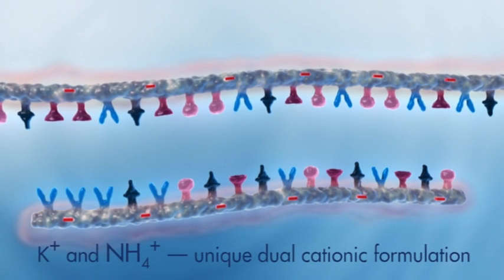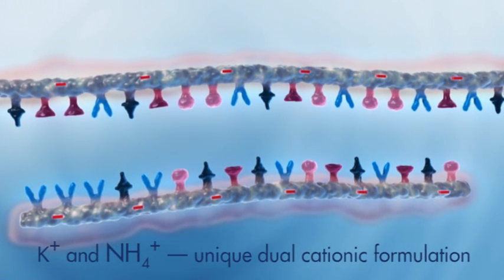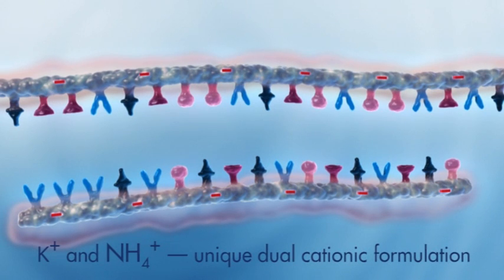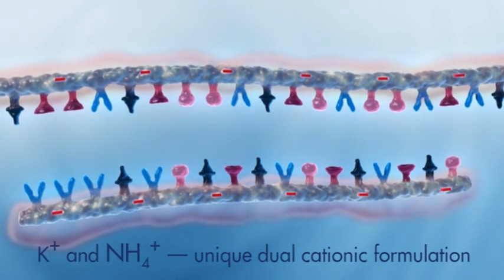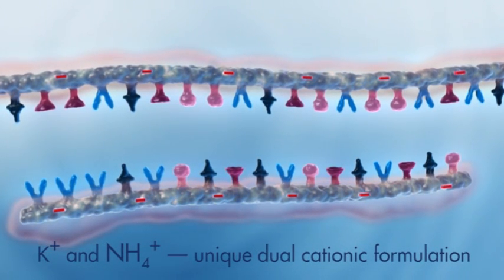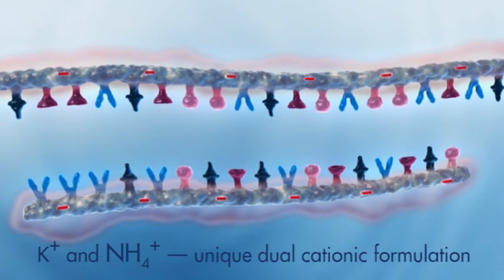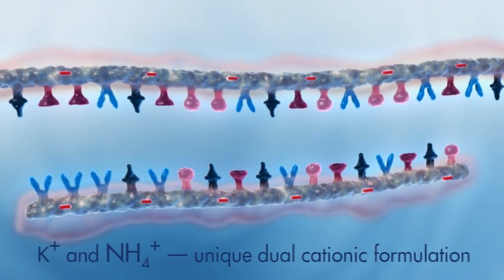QIAGEN has developed a PCR buffer with a unique dual cationic formulation. It consists of a balanced combination of K-plus and NH4-plus cations and has a strong influence on PCR performance.